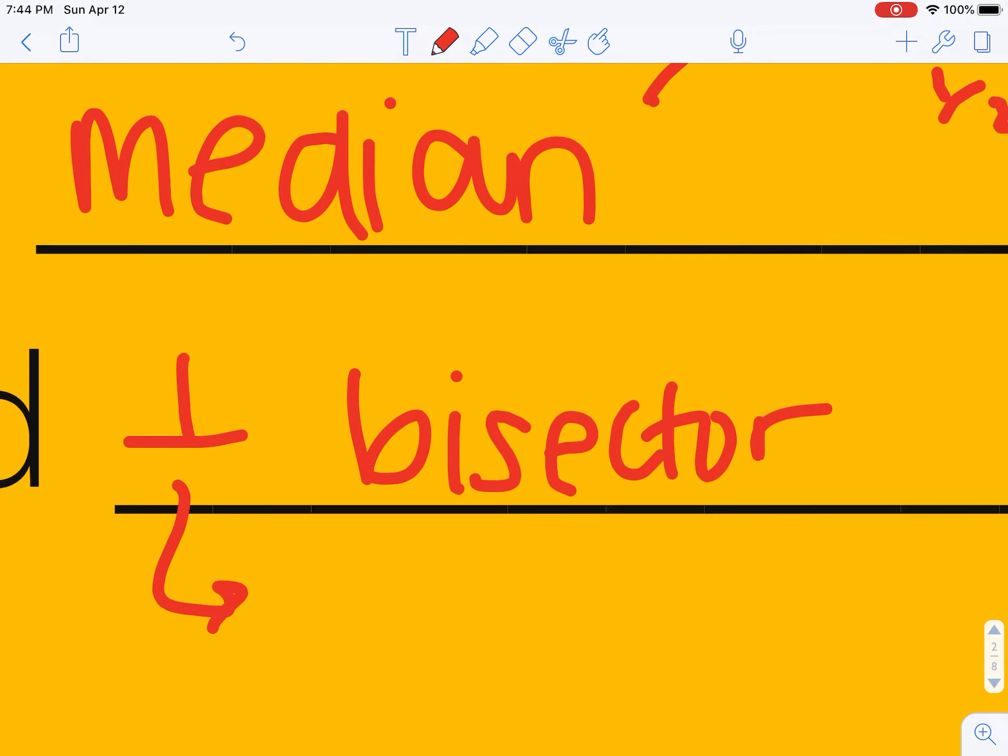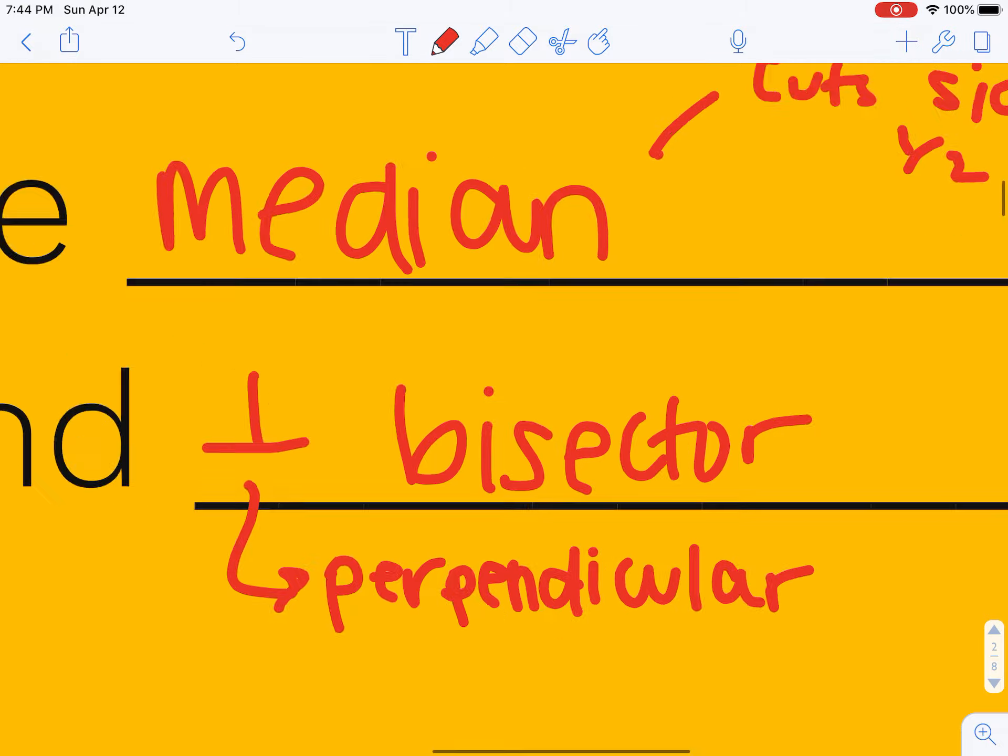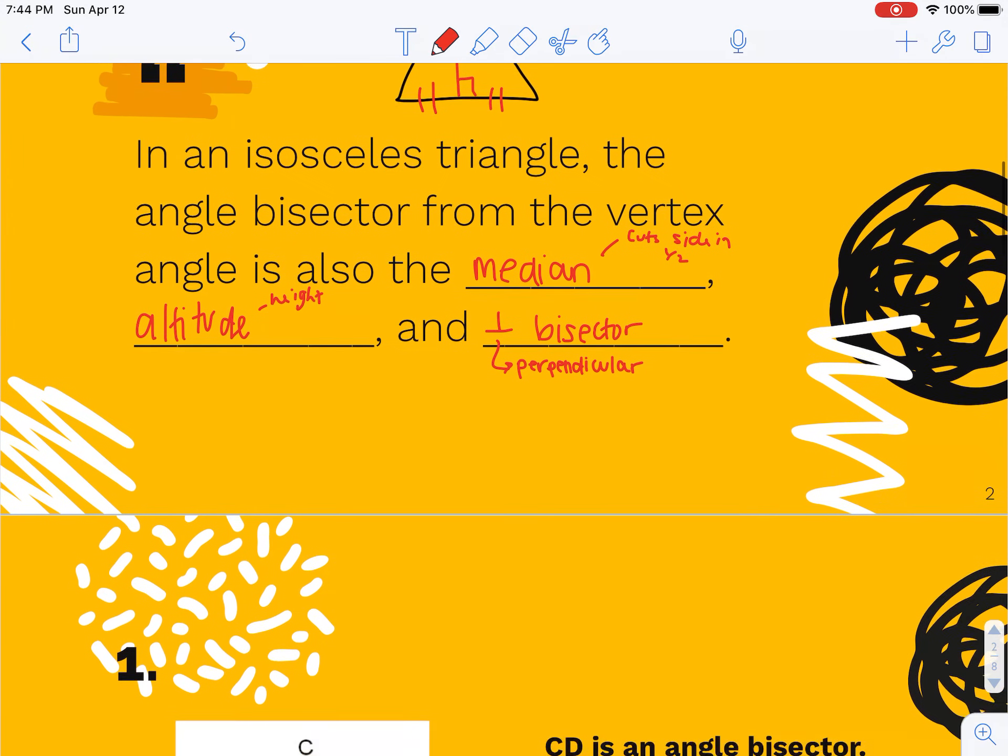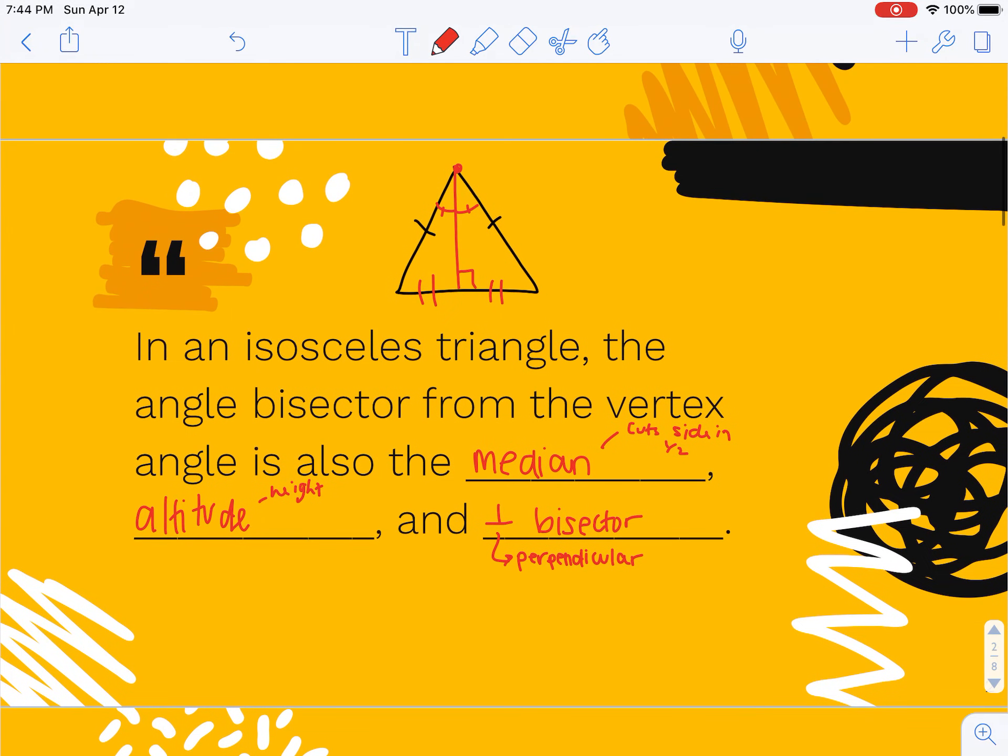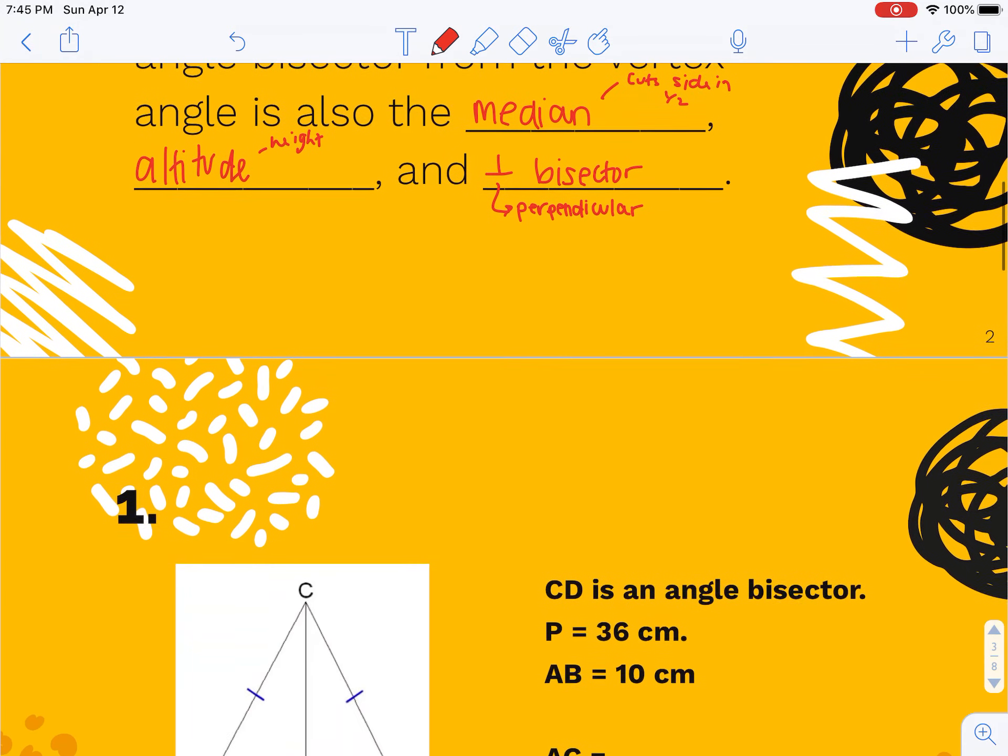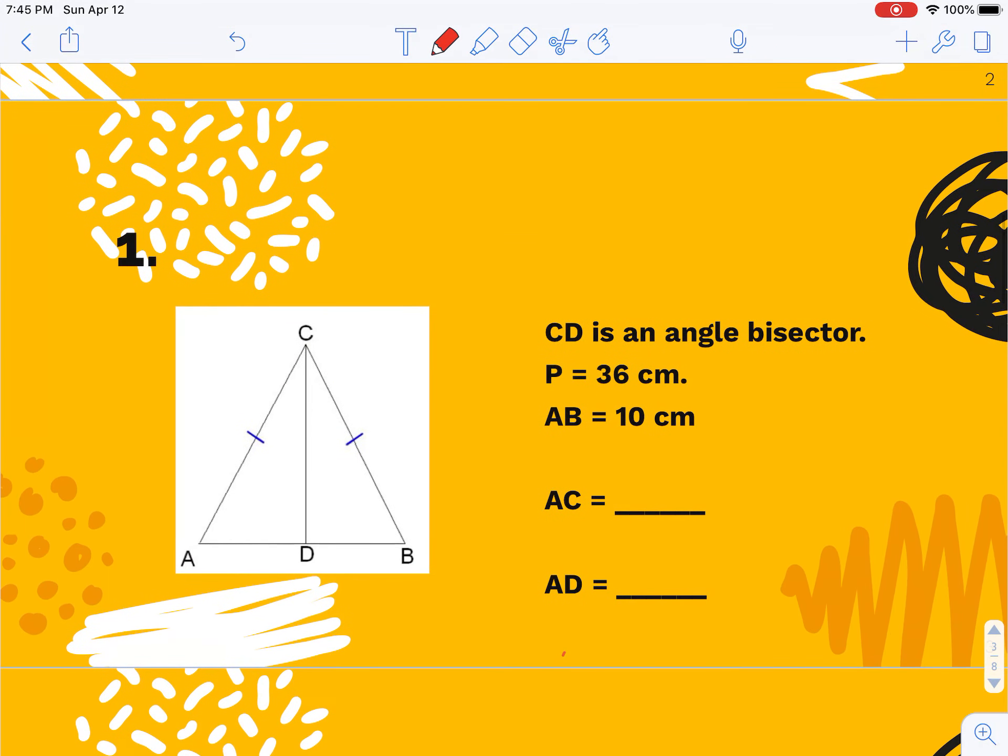So that means if I know a triangle is isosceles and I know it is one of those things, I automatically know it is the other three as well. And we're going to practice this a little bit.